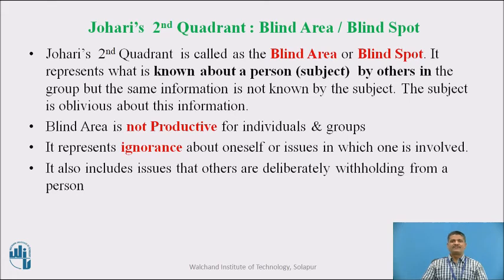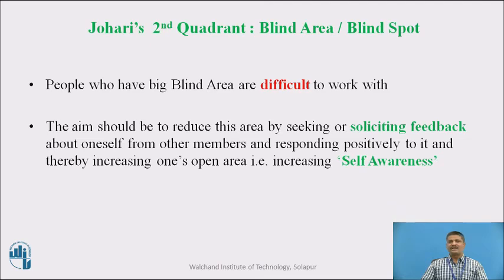Johari's second quadrant is called the blind area or blind spot. It represents what is known about a person by others in the group, but the same information is not known by the subject — the subject is oblivious about this information. Blind area is not productive for individuals and groups; it represents ignorance about oneself or issues in which one is involved, and also includes issues that others are deliberately withholding from a person. People who have a big blind area are difficult to work with. The aim should be to reduce this area by seeking feedback from other members, responding positively to it, and thereby increasing one's open area and self-awareness.